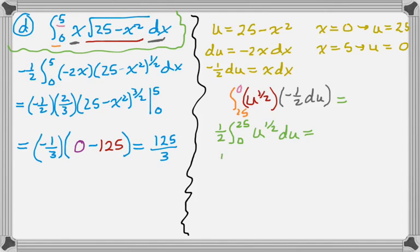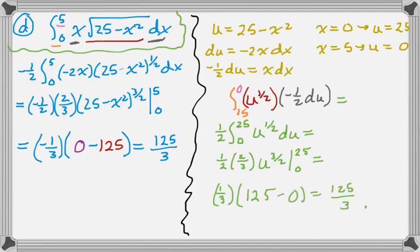So the negative with the 1/2 cancels out with the negative from changing the bounds. And we get this. So now we just plus 1 times the reciprocal. And evaluate it at 0 and 25. And we've already done all this math. So that's 125 minus 0. 125 over 3. Get the same answer either way. It's up to you which one you try to use.